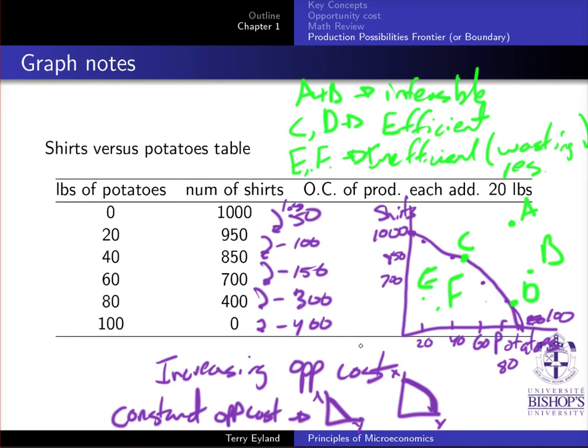In the absence of trade, our production possibilities frontier is also our consumption possibilities frontier because all that we can consume is based on all we can produce. We'll see later on with trade that we might be able to consume more. But otherwise, if we're a country on its own on an island, this is what we would be limited as options of consumption.